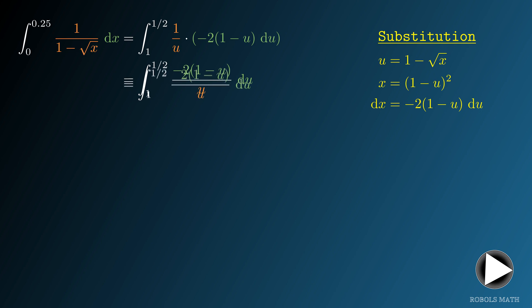We can absorb the negative coefficient by flipping the order of integration. We can also factor out the coefficient 2 for simplicity.